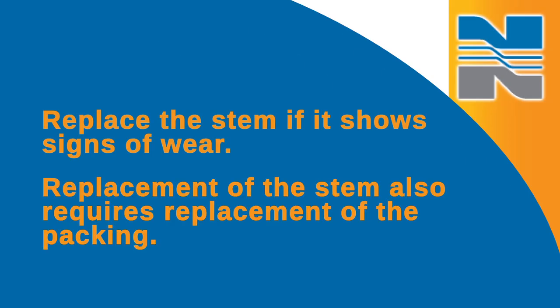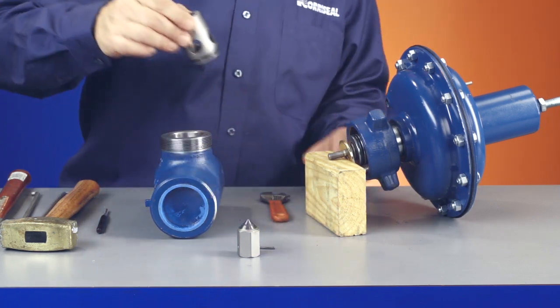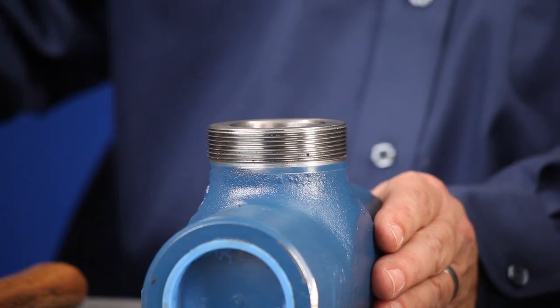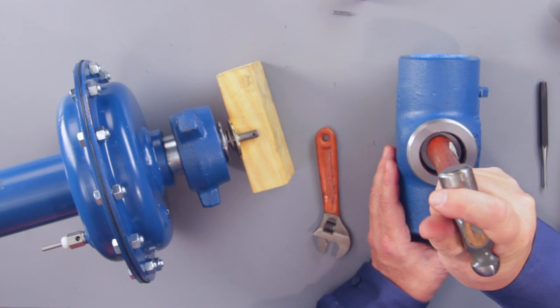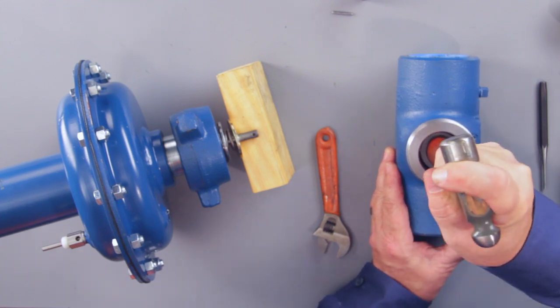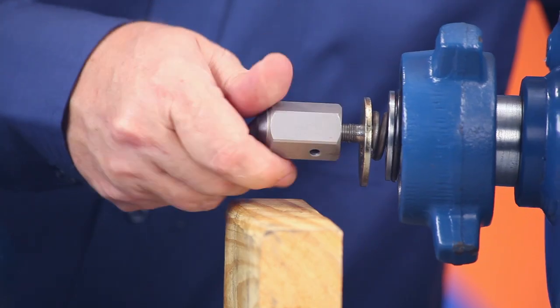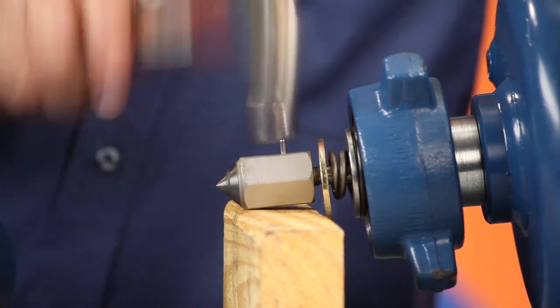Replacement of the stem also requires replacement of the packing. After you've replaced the packing correctly, it's time to reassemble the trim. To do this, you'll need to attach the plug to the stem and insert the seat back into the valve body. Finally, you'll reassemble the valve by reversing the order of disassembly.